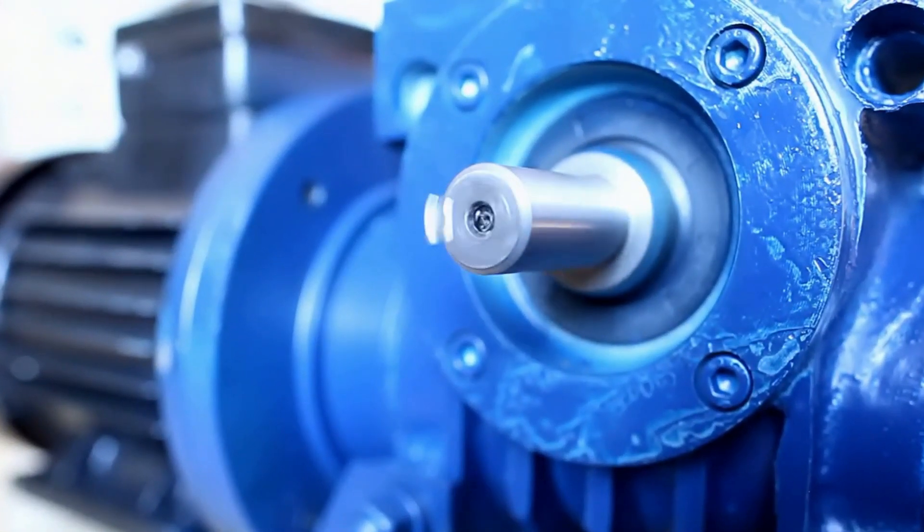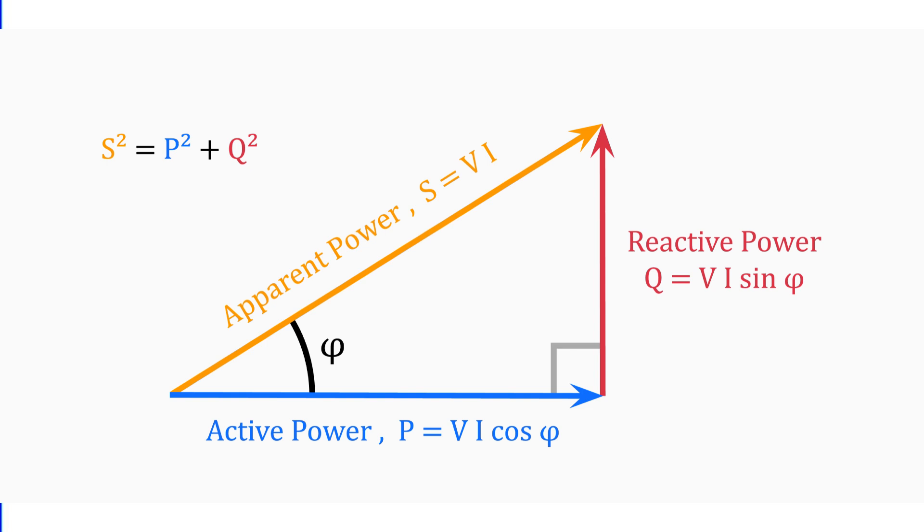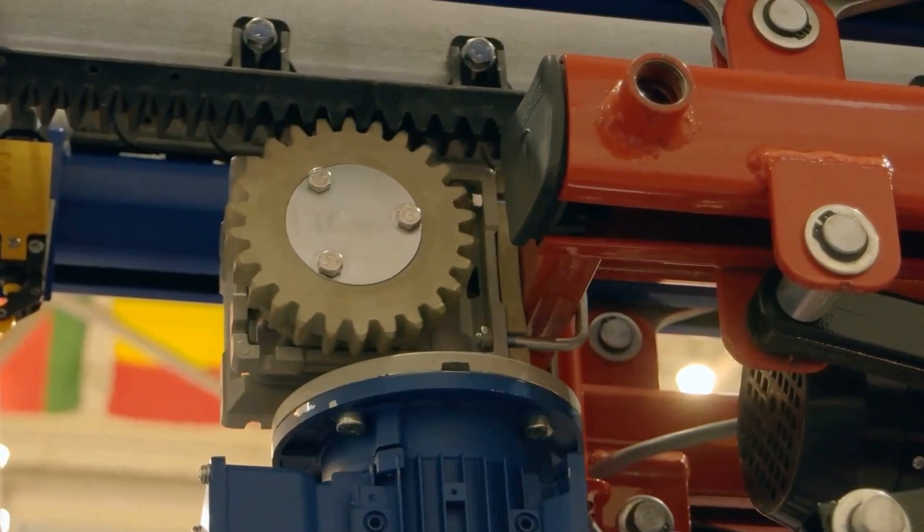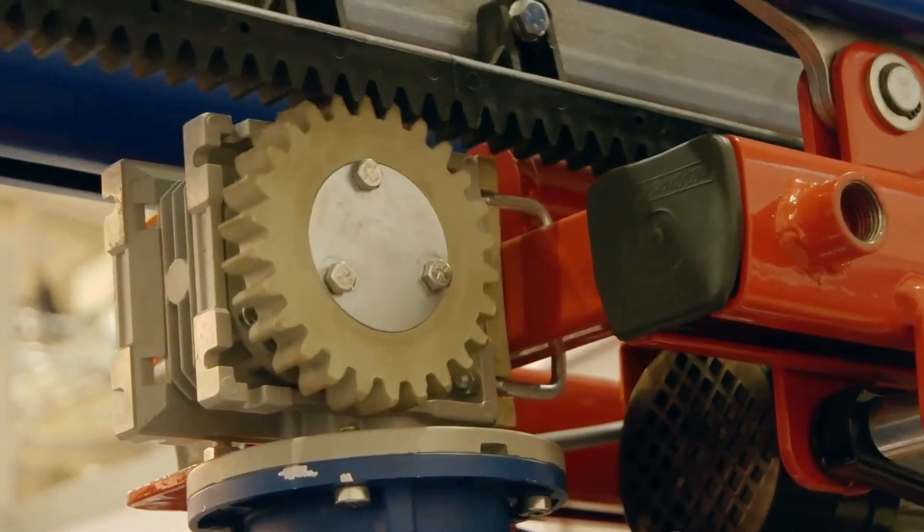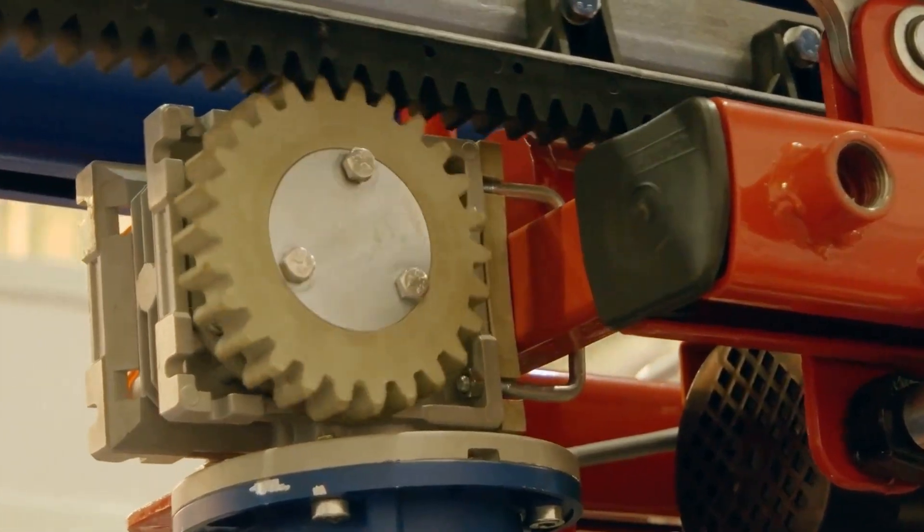Electrical power is not as straightforward as it might seem. It's actually a mix of two components. The first one is active power, the real power that the motor uses to perform its job, like turning a shaft. It's directly tied to the torque produced.